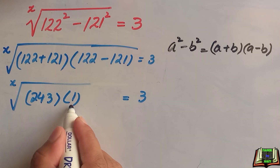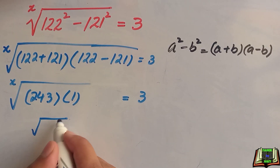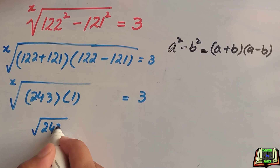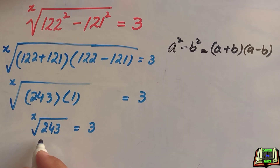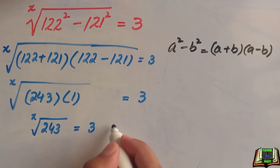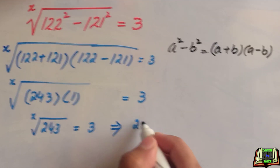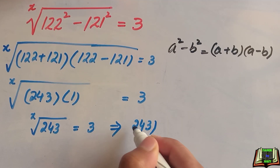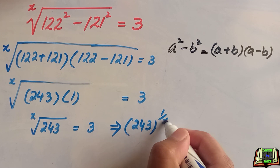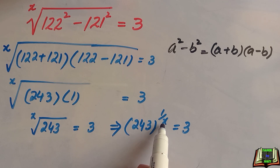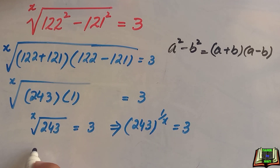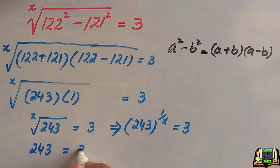So x root of 243 is equal to 3, and this can be written as 243 raised to the power 1 over x is equal to 3. Taking the exponent to the right-hand side, this becomes 3 raised to the power x.